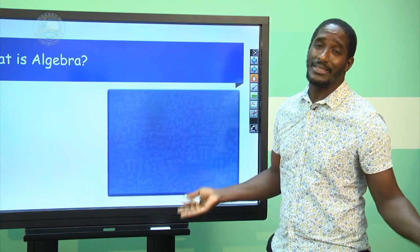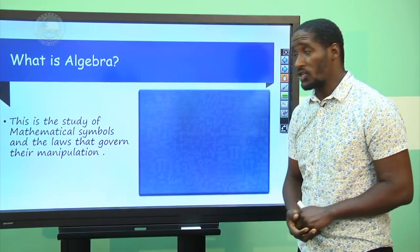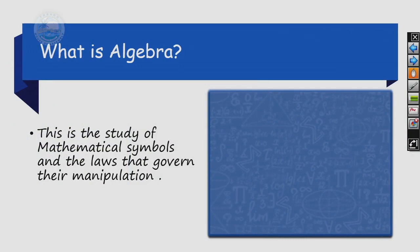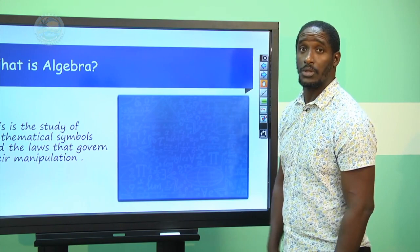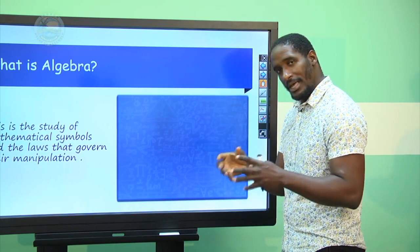We are looking at algebra. The first question you have to ask yourself is: what is algebra? According to our definition, algebra is the study of mathematical symbols and the laws that govern their manipulations. With algebra, almost anything is a symbol — I could utilize a cup to represent the weight of my shoe. But formally, what we generally utilize in algebra are the letters of the alphabet.